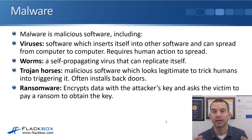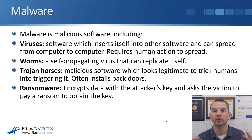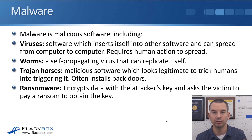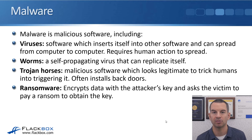Next up is malware, which is any malicious software. This includes viruses. A virus is software which inserts itself into other software and can spread from computer to computer. A virus requires human action to spread. For example, maybe you download a software program from the internet and it's got a virus. You've now infected your PC. If you then copy that executable program onto a USB stick and share it with somebody else and they run it, then they are now infected too. A virus spreads from computer to computer but requires human interaction — for example, emailing it to somebody else or sharing it on a USB stick.